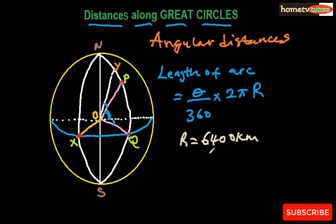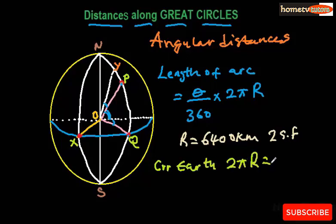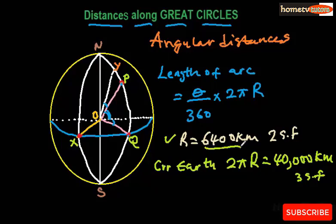That value of 6,400 km is correct to two significant figures. Also, the circumference of the Earth, 2πR, is usually given as 40,000 km, correct to three significant figures. Either of these values may be used in questions given unless you are told otherwise.